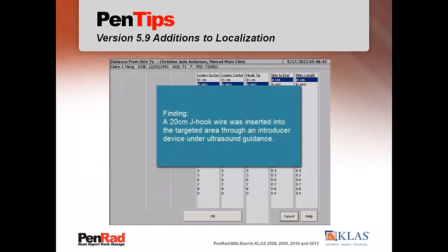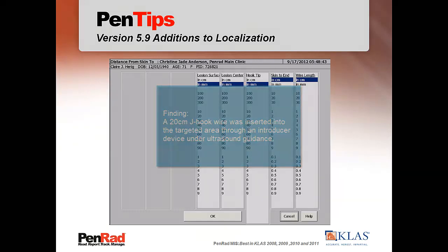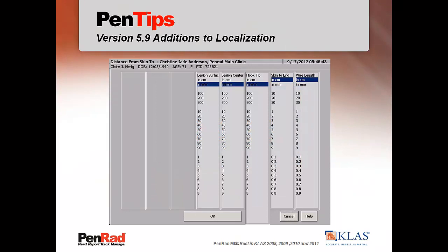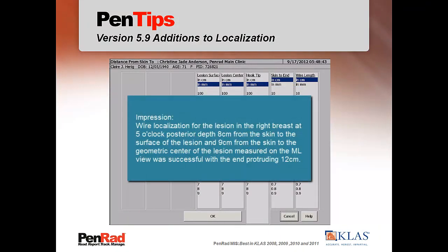Finding example: a 20-centimeter J-hook was inserted into the targeted area through an introducer device under ultrasound guidance. Impression example: wire localization for the lesion in the right breast at 5 o'clock posterior depth 8 centimeters from the skin to the surface of the lesion and 9 centimeters from the skin to the geometric center of the lesion measured on the ML view was successful with the end protruding 12 centimeters.